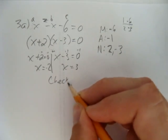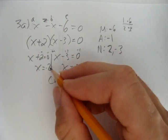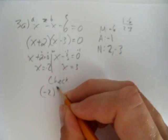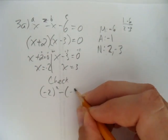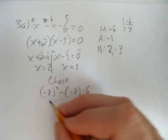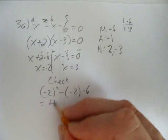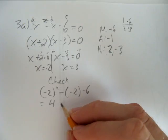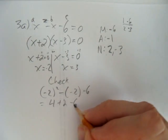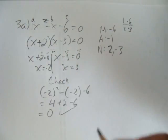I can check my answer by subbing in. What happens when I do negative 2 squared minus negative 2 minus 6? Well, I get negative 2 squared is 4 minus minus 2, that's plus 2, take away 6, and I get 0. So that checks out.